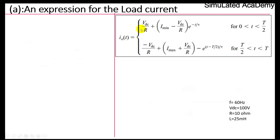The load current has a general expression: i(t) = VDC/R + (I_min − VDC/R) · e^(−t/τ), where τ is the time constant equal to L divided by R. This expression applies for the time interval 0 to T/2.